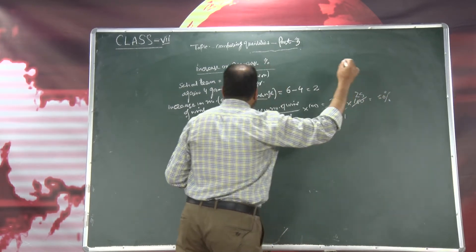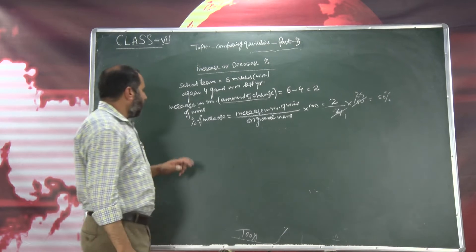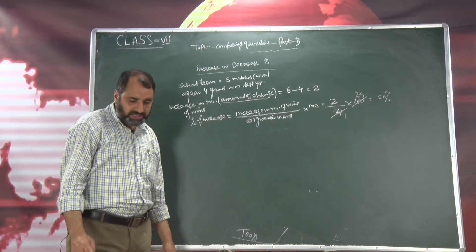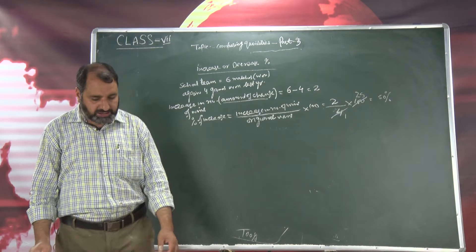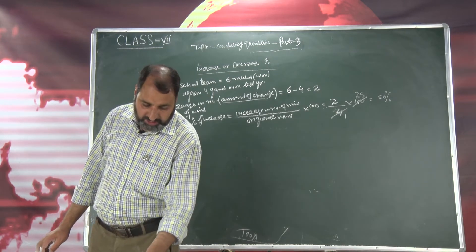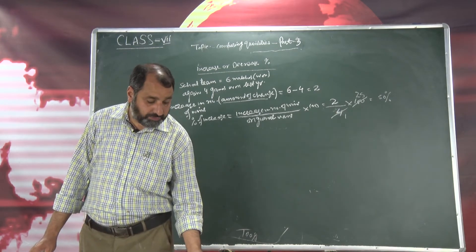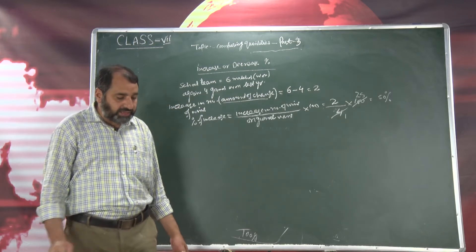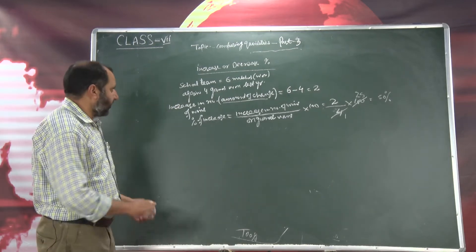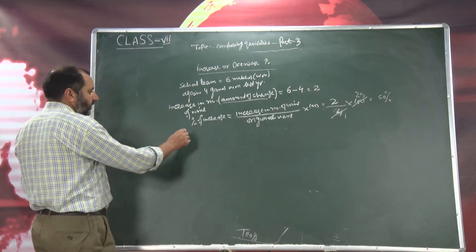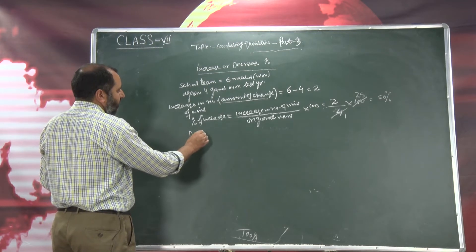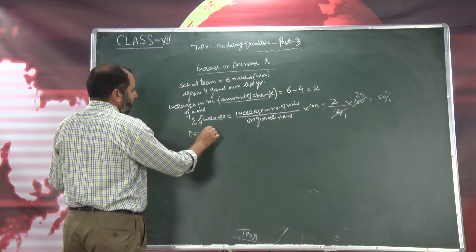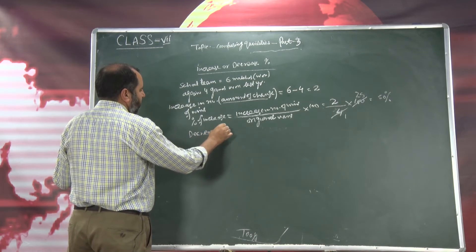Yani 50 percent increase ho gai — joh match ke darmian last year aur is saal increase ho gai hai, wo ho gai hai 50 percent. Is tariq se hum increase percentage kehte hai. Doosra hota hai decrease percent.